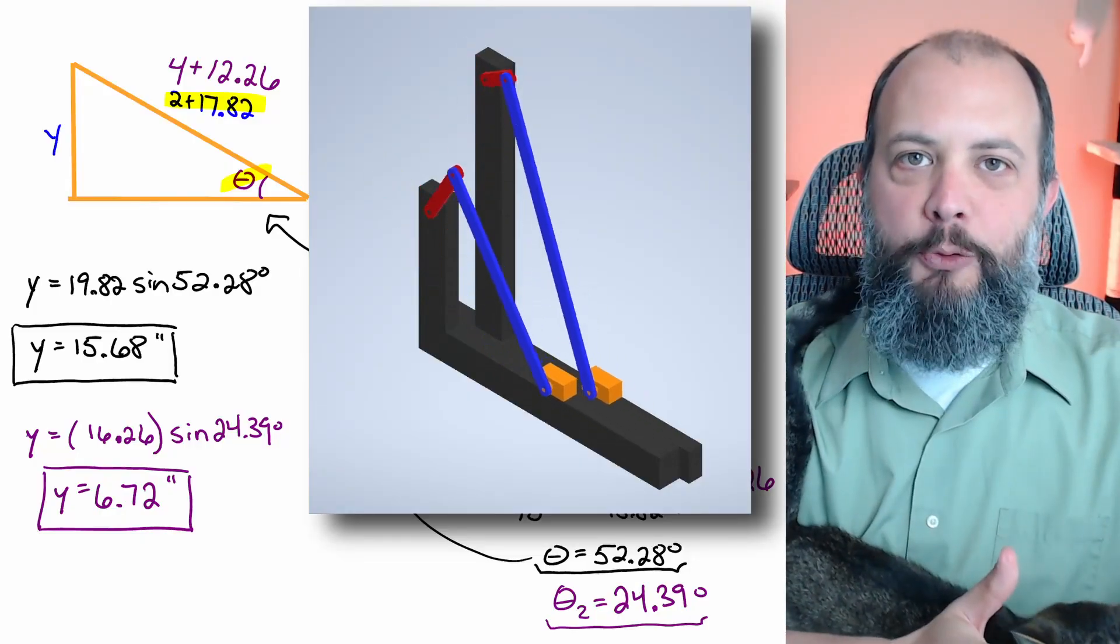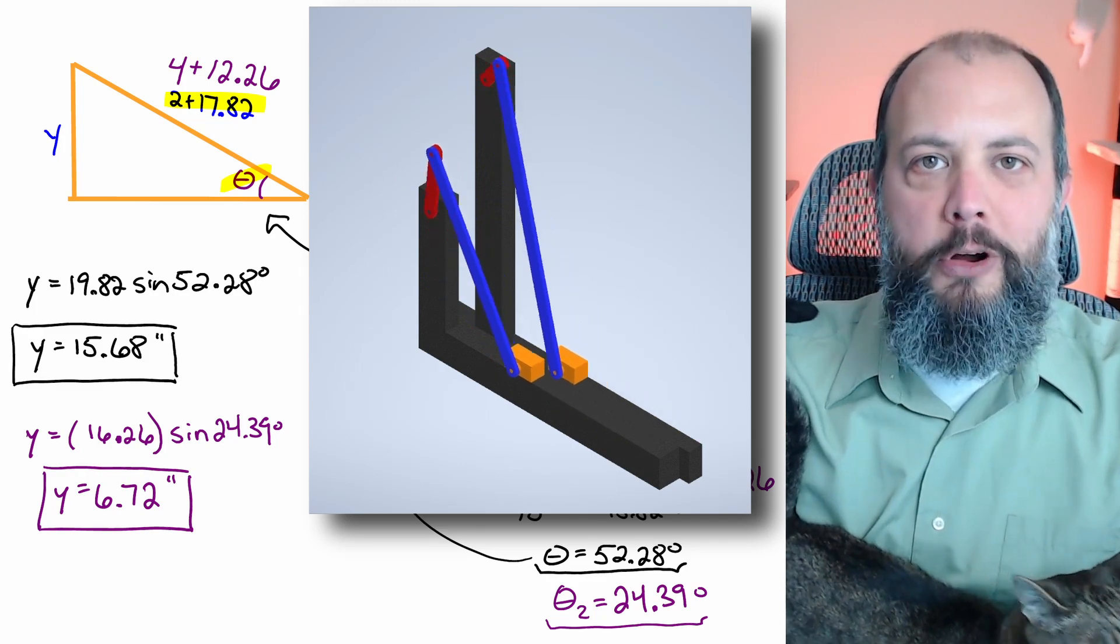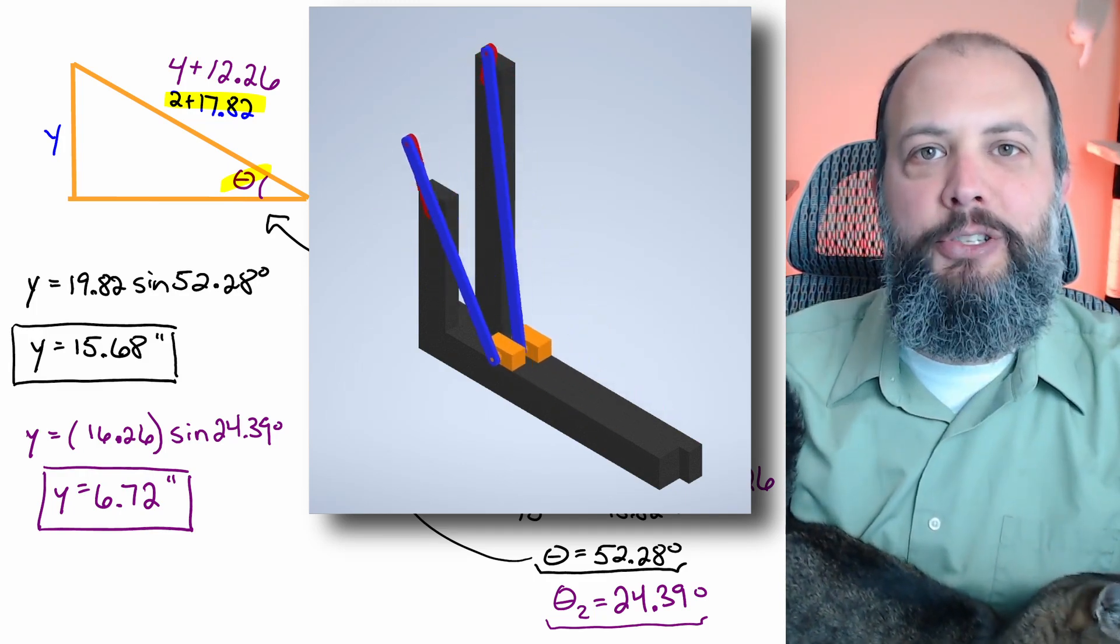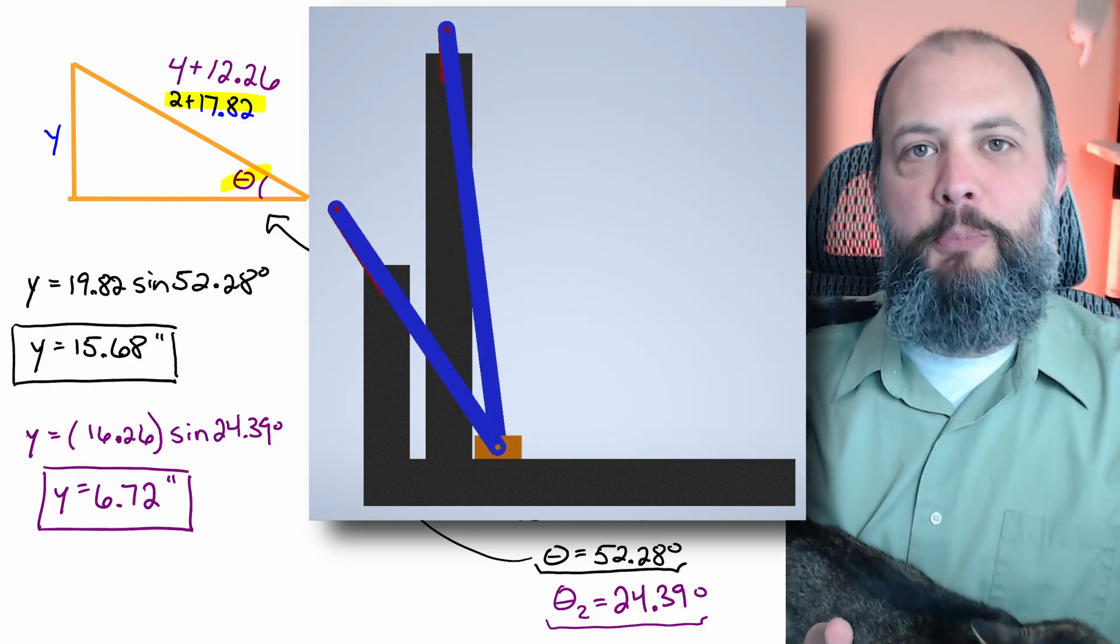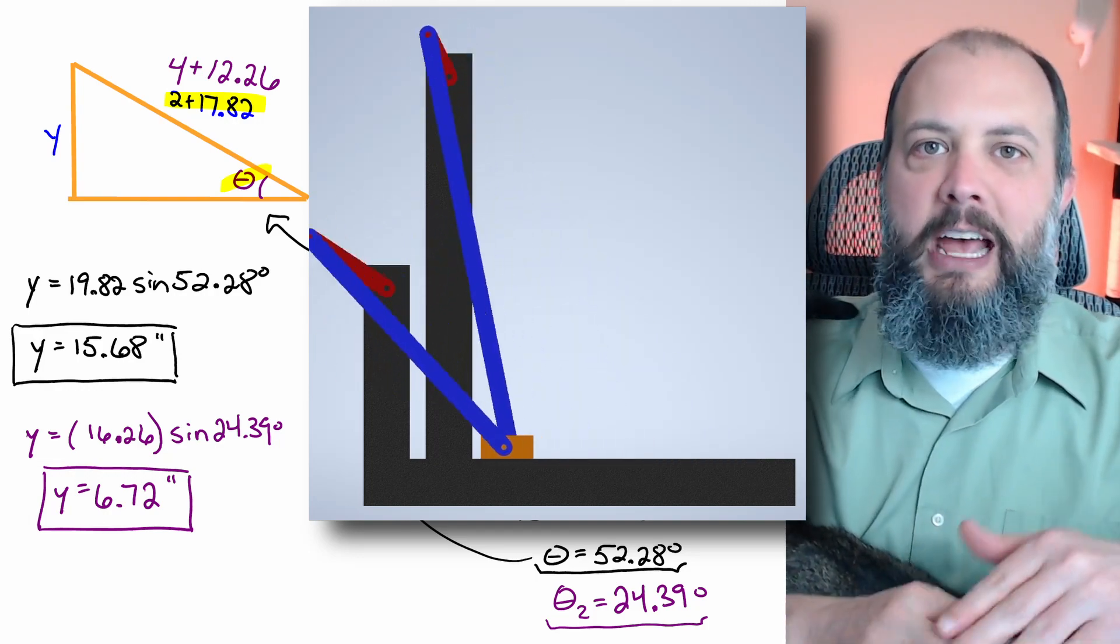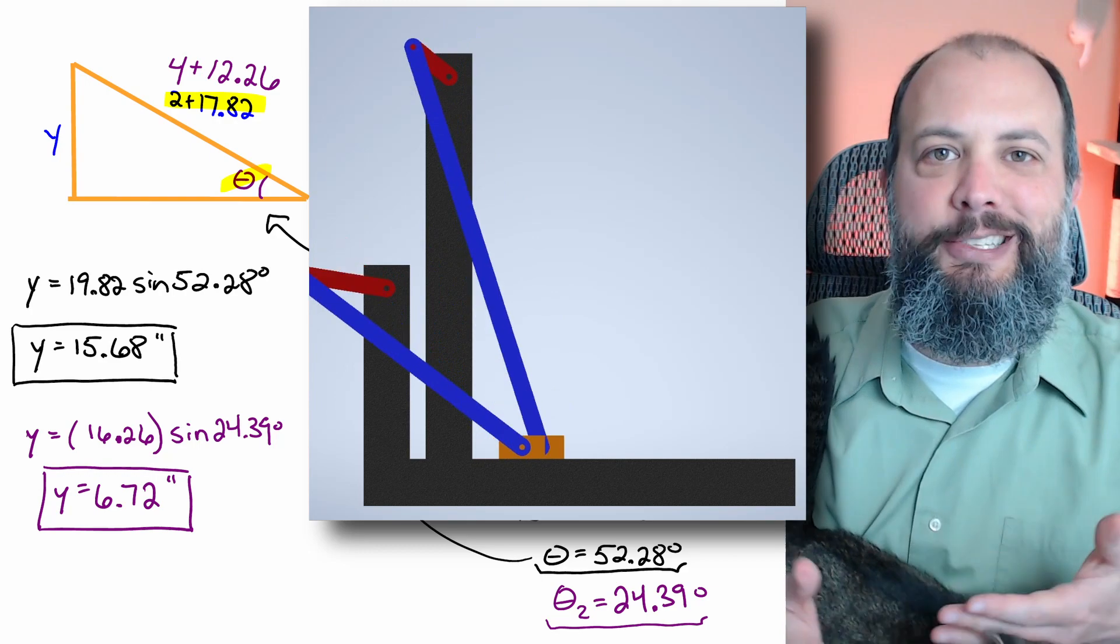So a much shorter crank will usually give you a larger force at the end that is applied to the coupler. So for a high torque application that's where you may prefer to have a shorter crank length and a much larger offset distance y.